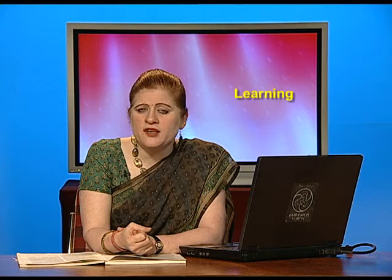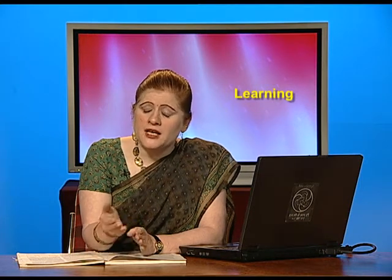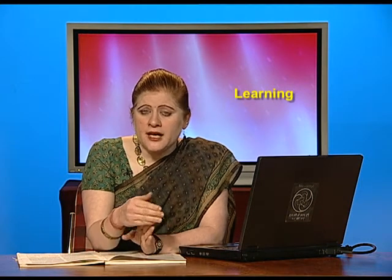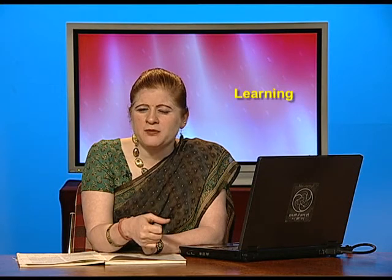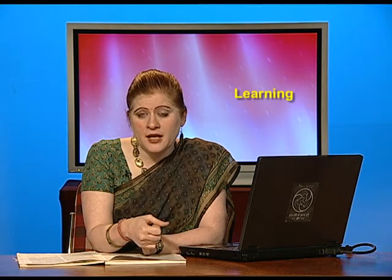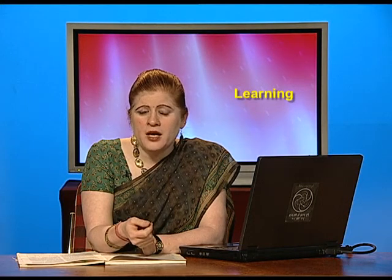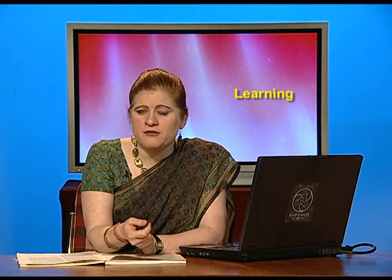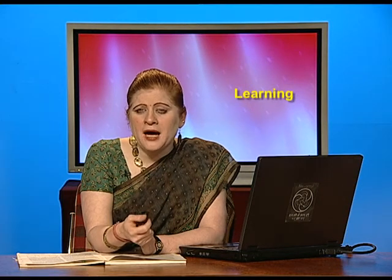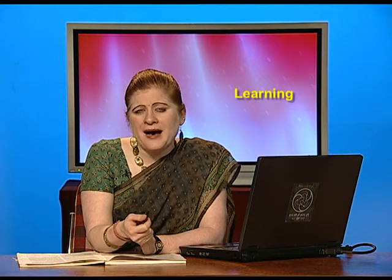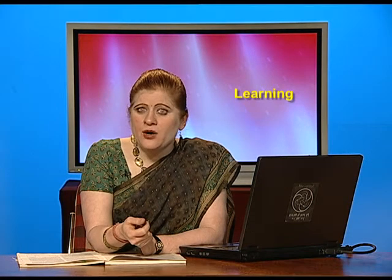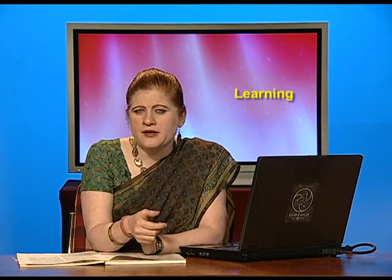Negative reinforcers are the ones which, if taken out of the experiment, increase the possibility of occurrence of a response. For example, any kind of punishment, discomfort — in a lab situation, electric shocks, a very cold environment, abusive words, anything that makes you uncomfortable. Primary reinforcers are the biological determinants — the ones that are naturally associated with an organism. For example, water to quench thirst, food to satisfy hunger.